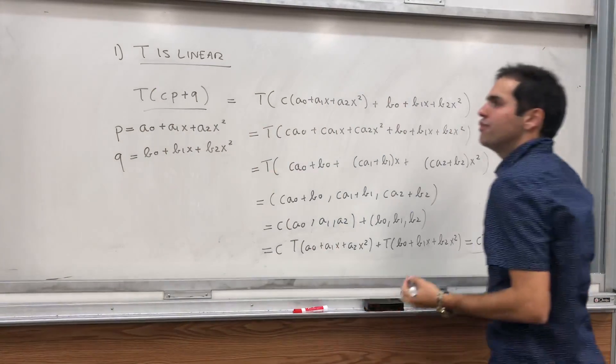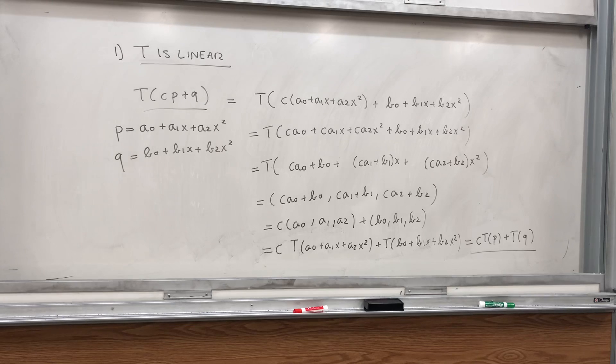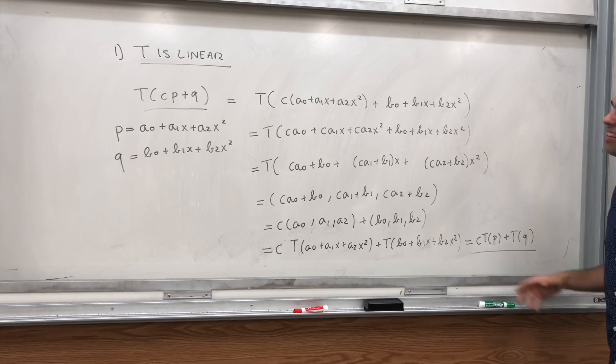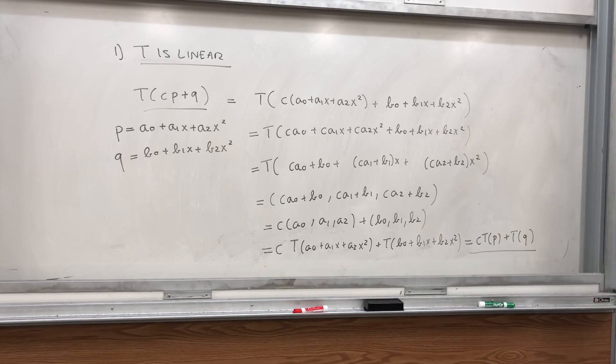And therefore, T of Cp plus Q is CTP plus CTQ. And therefore, T is indeed a linear transformation. So that's good, we already have one-third done. But it turns out the rest is much easier.